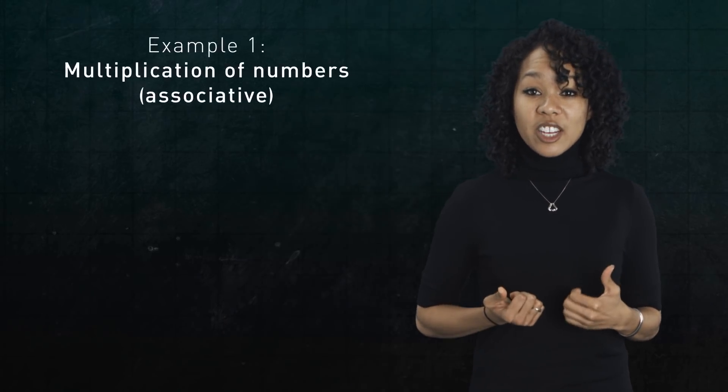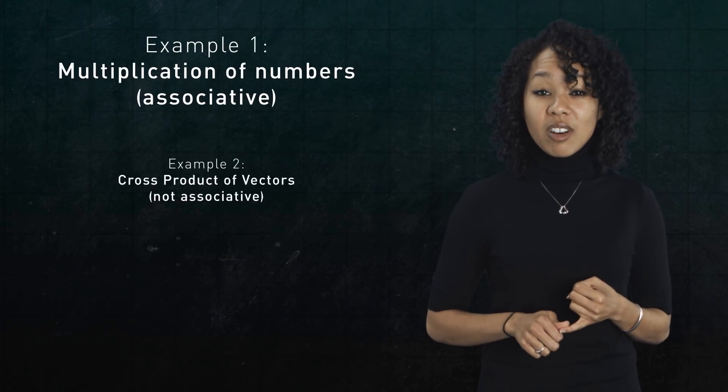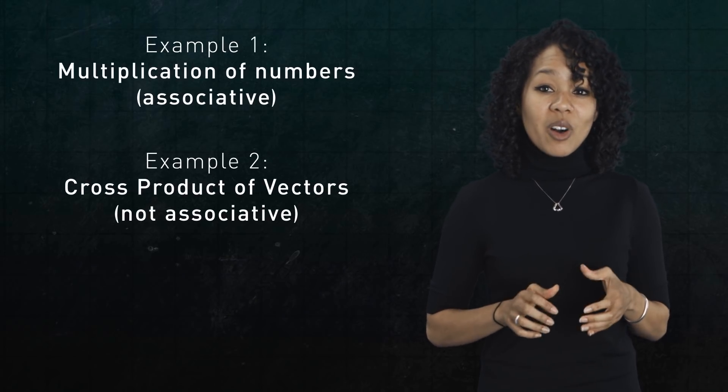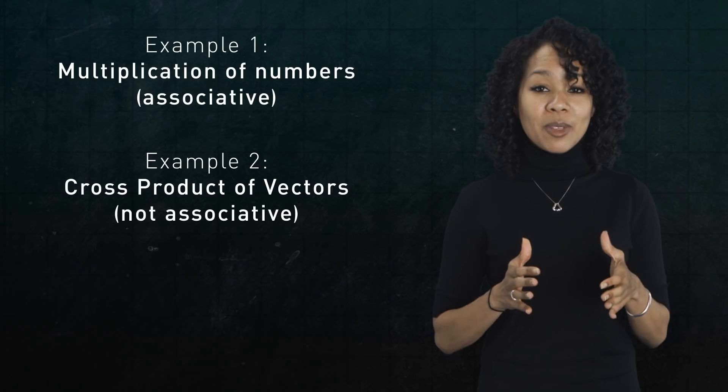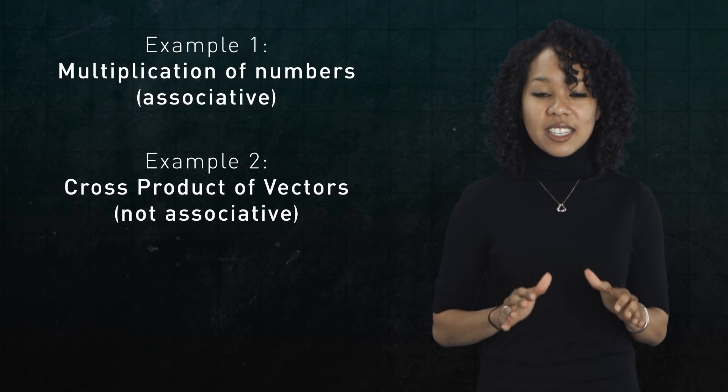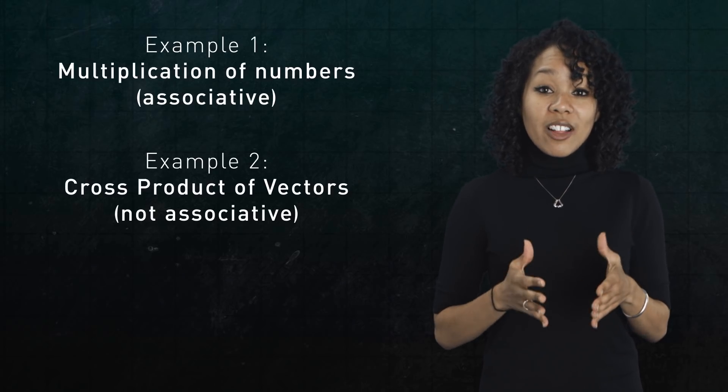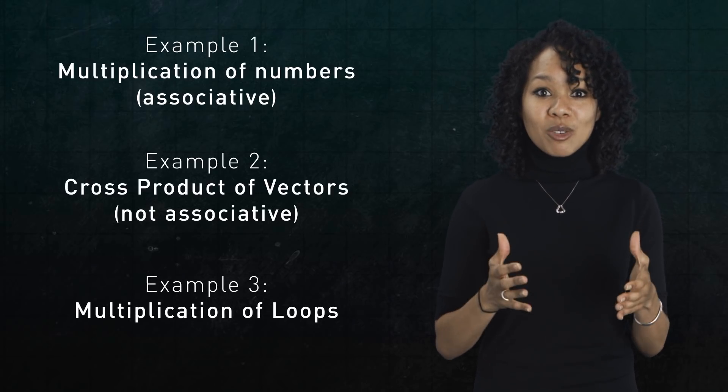Now, I'd like us to take a step back and think about associativity again. We talked about two examples. Multiplication of real numbers is associative. The cross product of vectors is not. Well, I'd like to tell you about a third example that maybe you haven't heard of. This example comes from topology, a branch of math that studies shapes. In particular, topology gives us a way to multiply loops.